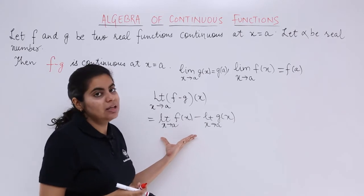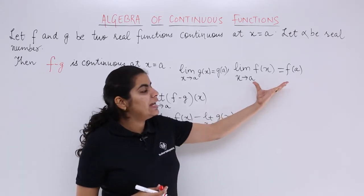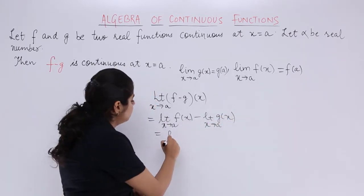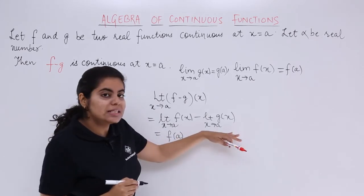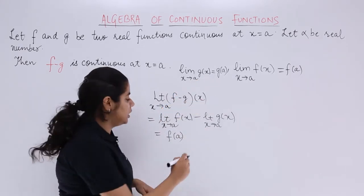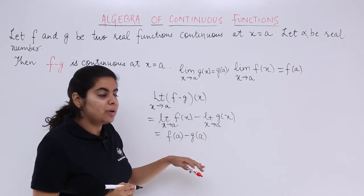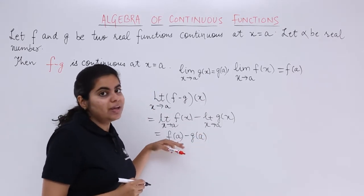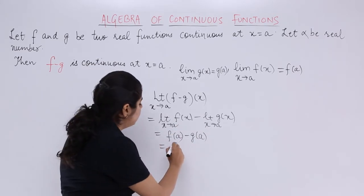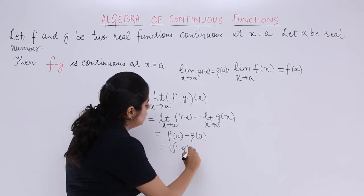Now what is the value of this thing? Limit f(x) at x tends to a, it is f(a). And what about this thing? Limit g(x) at x tends to a is g(a). What other thing that you can do is, instead of writing f(a) minus g(a), you can always write (f minus g)(a).